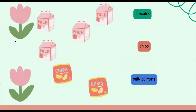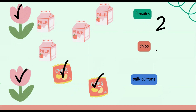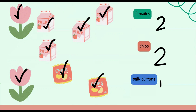Here we have flowers, milk cartons, and chips. Let's count. First we're going to count the flowers: one, two. Now we're going to count the chips. Count with me: one, two. Good job, we have two chips. Now we're going to count the milk cartons. Are you ready to count? Here we go: one, two, three, four. Excellent work! We have four milk cartons. In this object set we have two flowers, two chips, and four milk cartons. You guys are doing a great job!